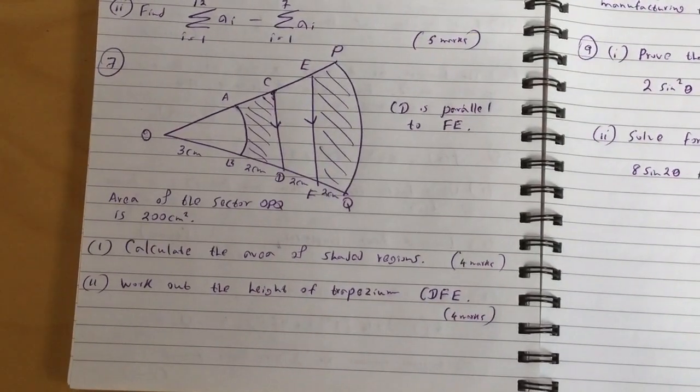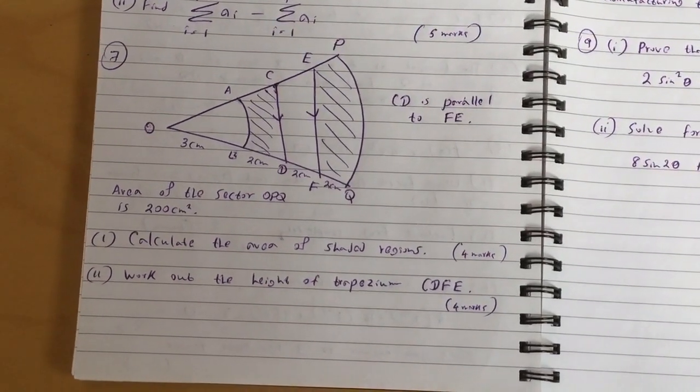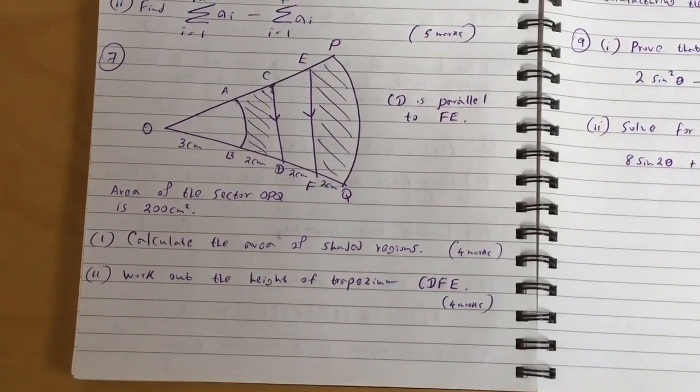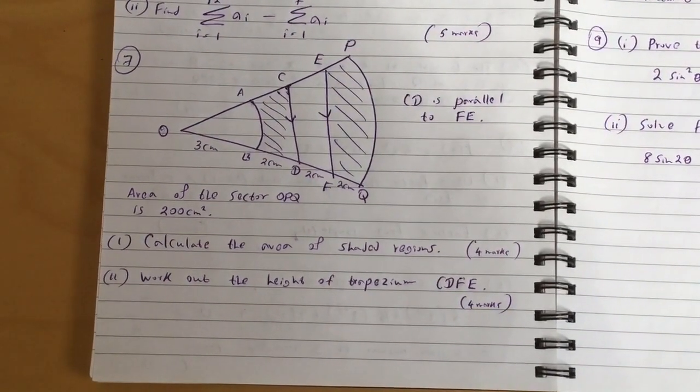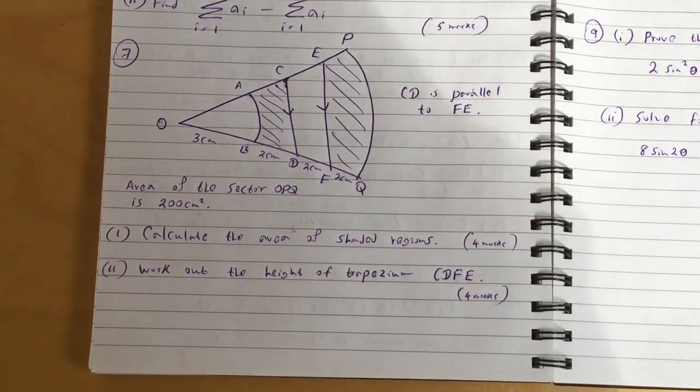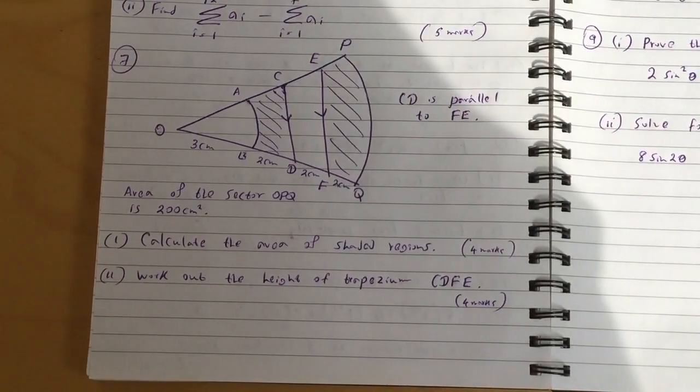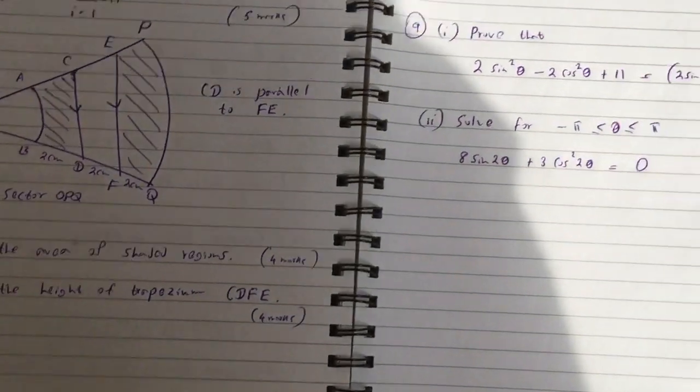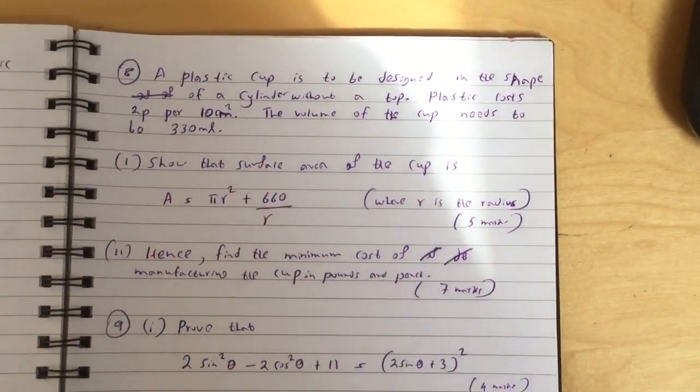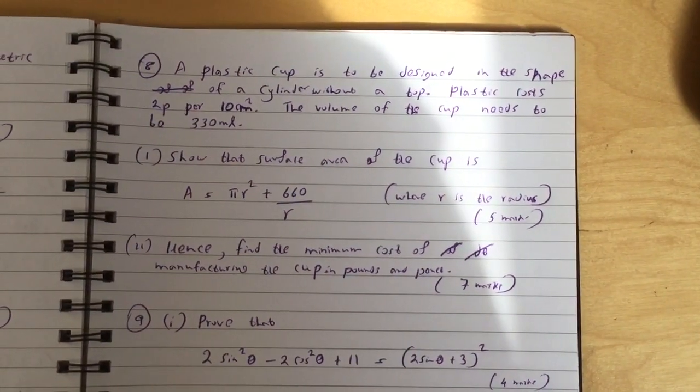Question one: calculate the area of shaded regions, so that's the combined area of both regions. Part two: work out the height of trapezium CDFE.